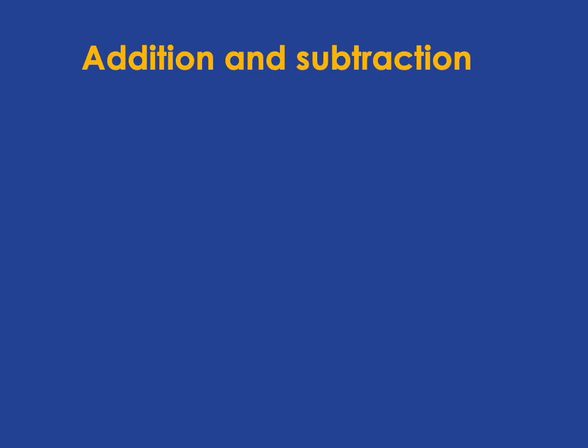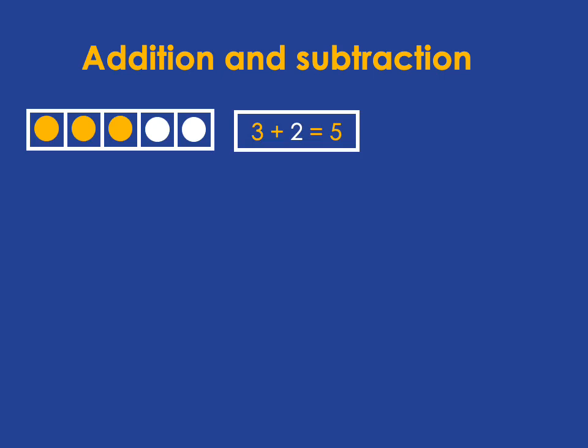Addition and subtraction are related, and so from one simple picture like this one we can get a whole lot of facts. For example, we can see that 3 plus 2 gives us 5, which we write like that. But we can also write it like this, because the equal sign just means that the things on both sides of it are the same.